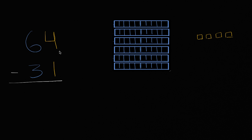So what does 64 actually mean? Well, we can use place value to think about that. The six is in the tens place, and the four is in the ones place. So the six over here, that means six tens.